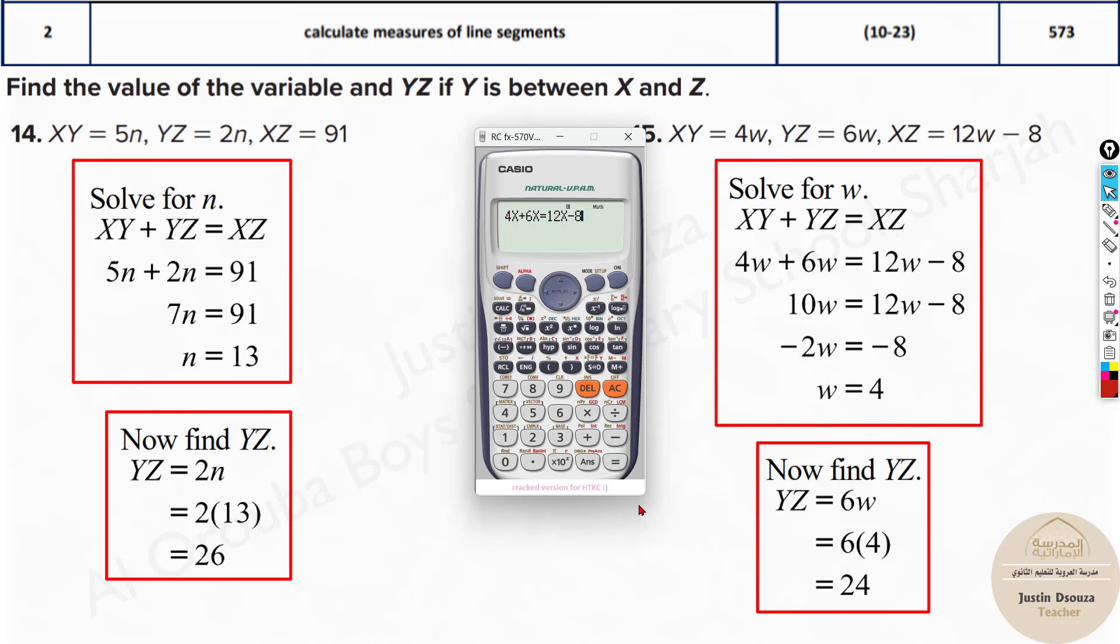Shift and solve. If you press equal to, you're getting an error. Press shift and then solve, and now press equal to. The answer is 4. The variable answer is 4. Now 4 times what is YZ? It's 6 times 4, which will give you the answer.